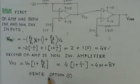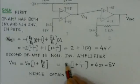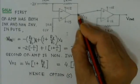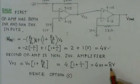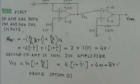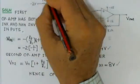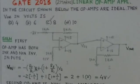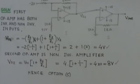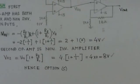So Vo1 here is after the first amplifier, 4 volts, into 1 plus 1 by 1, so 4 into 2. It comes to be 8 volts, so option C is the right choice here for this problem.